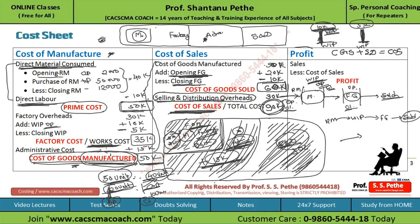After that we move to the profit part. We find out the total sales made during the period. Suppose total sales is Rs. 1,30,000 and cost of sales is Rs. 90,000 as calculated. Deducting the total cost from sales gives you the profit. So profit is Rs. 1,30,000 − Rs. 90,000 = Rs. 40,000. This is your profit.